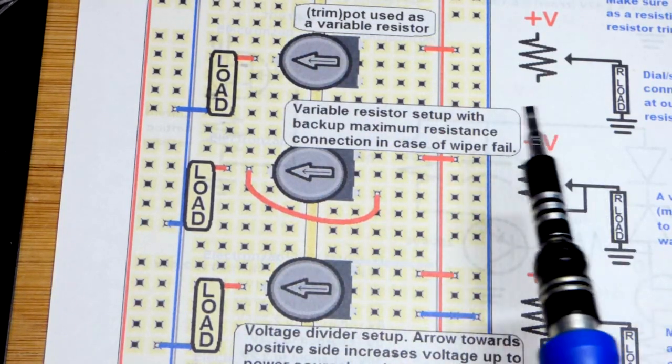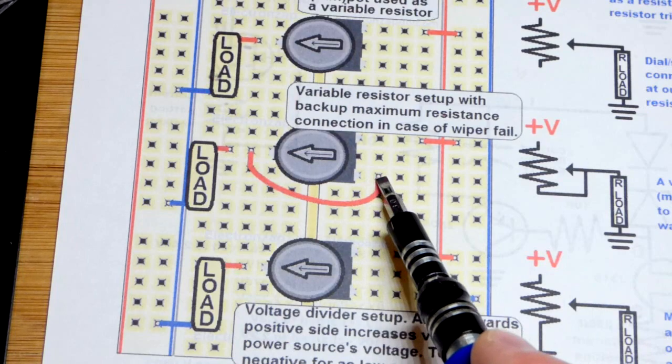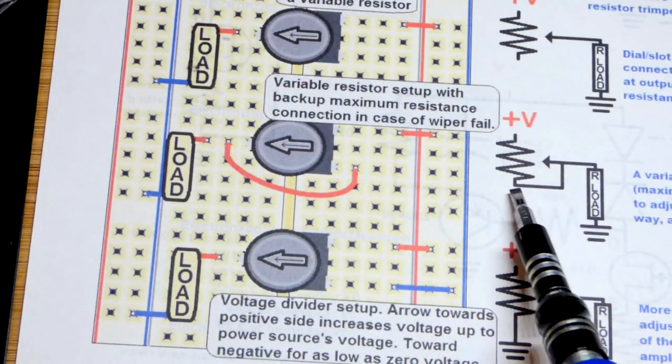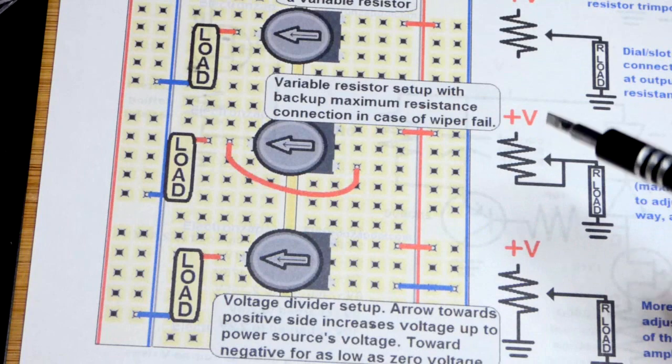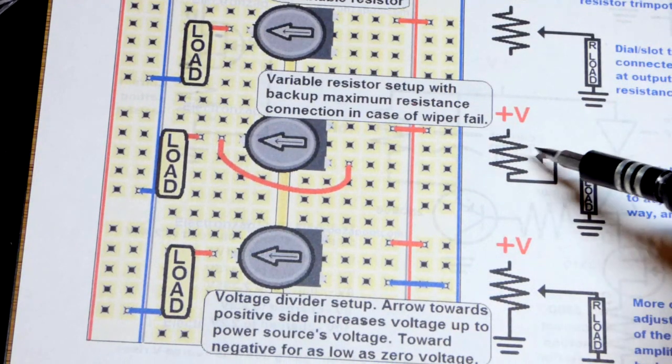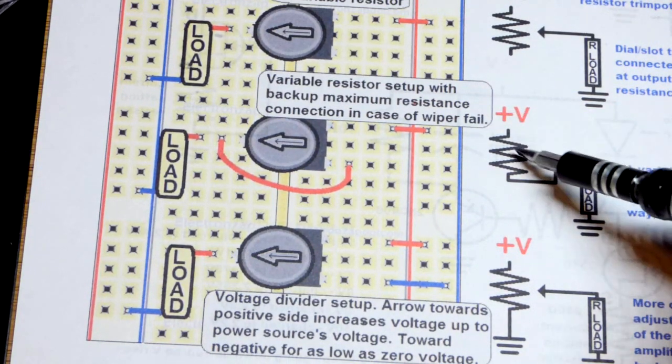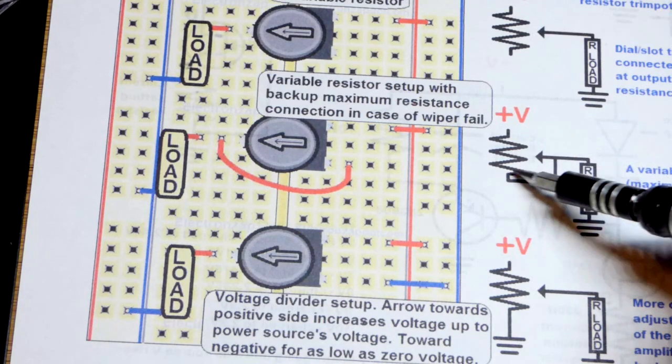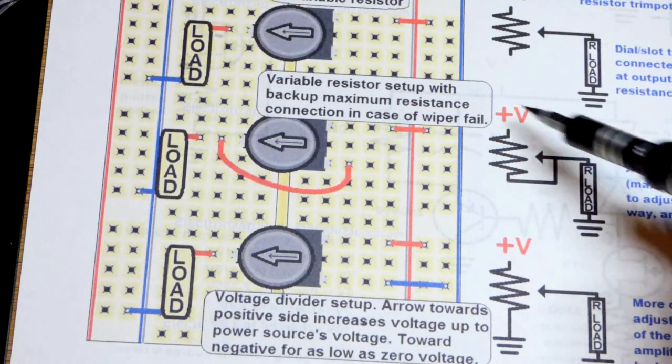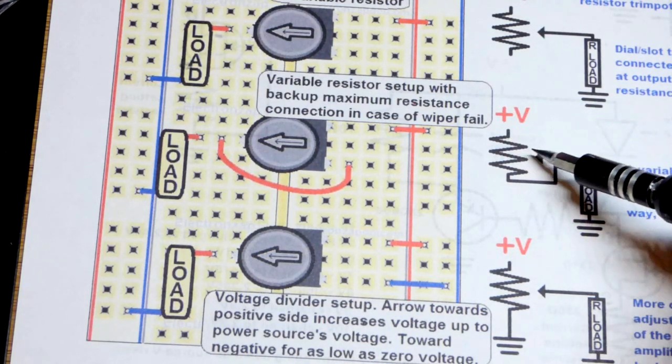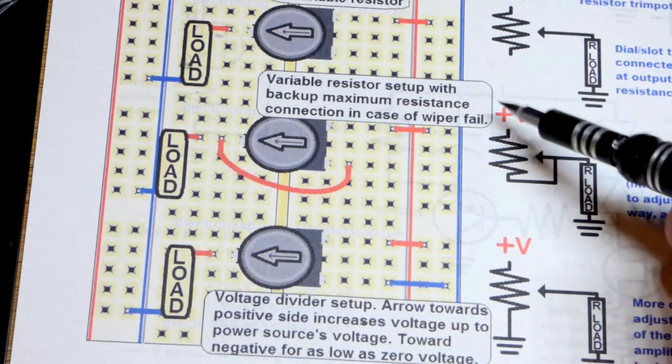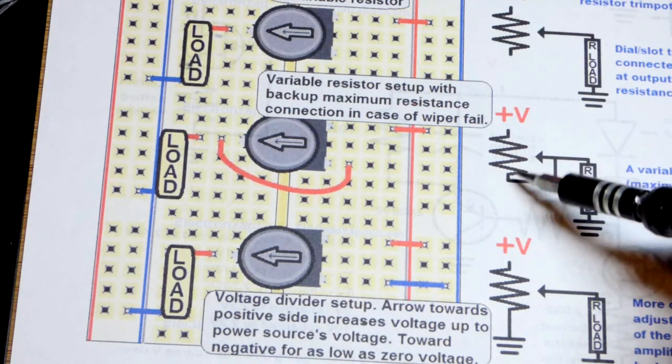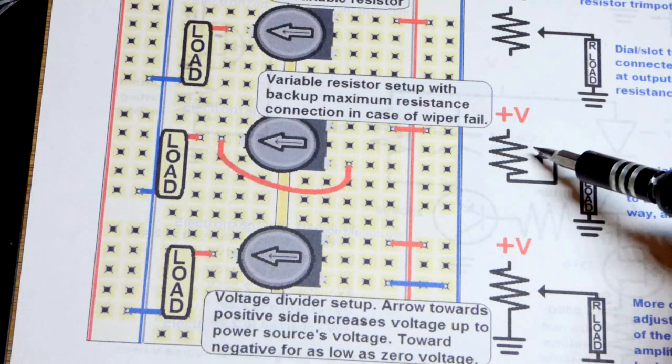The thing is though, now I have a jumper from the end of the resistive element to the wiper. The point of that is if we set it halfway, you can see we got half the resistance. It ignores this right here because we got current being pushed from there and pulled from there, so it goes there and doesn't care about this.